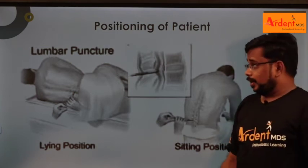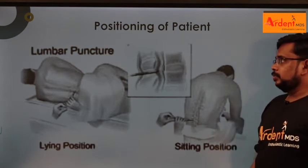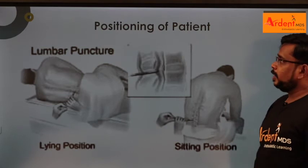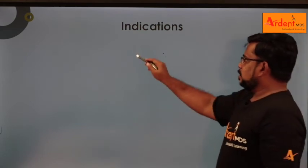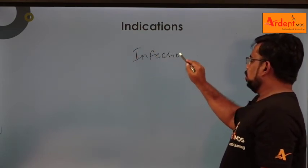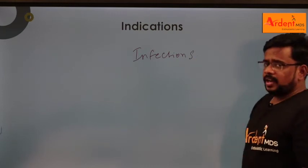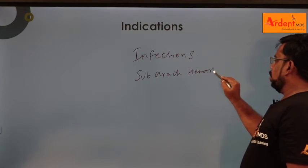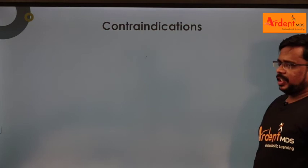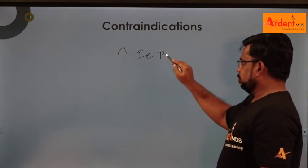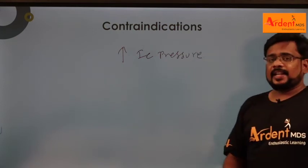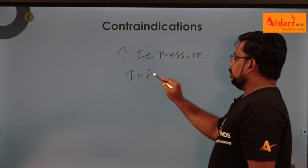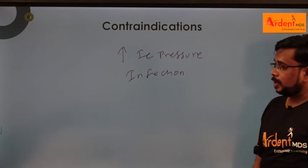It is a very skillful procedure - errors may even cause death of the patient, so be very careful when collecting cerebrospinal fluid. Indications: infection like meningitis to identify the pathology, and subarachnoid hemorrhage. Contraindications: increased intracranial pressure like brain abscess, and if there is any infection present at the puncture site. A very particular sterile process is needed before collecting cerebrospinal fluid.